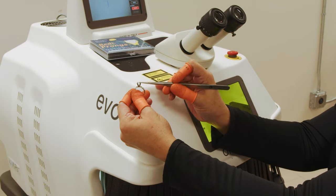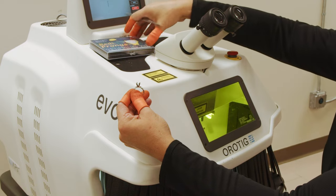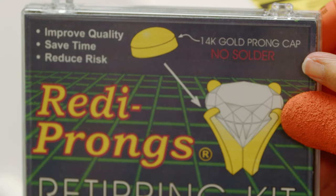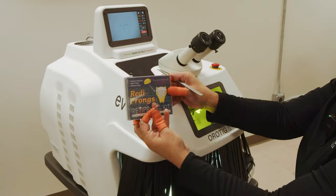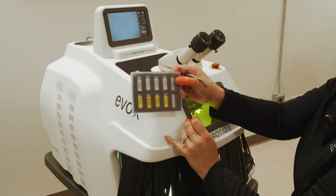We're going to do the second one using our Ready Prong. You want to make sure that you get the one with no solder. It's meant for laser and comes in different karats and different widths.